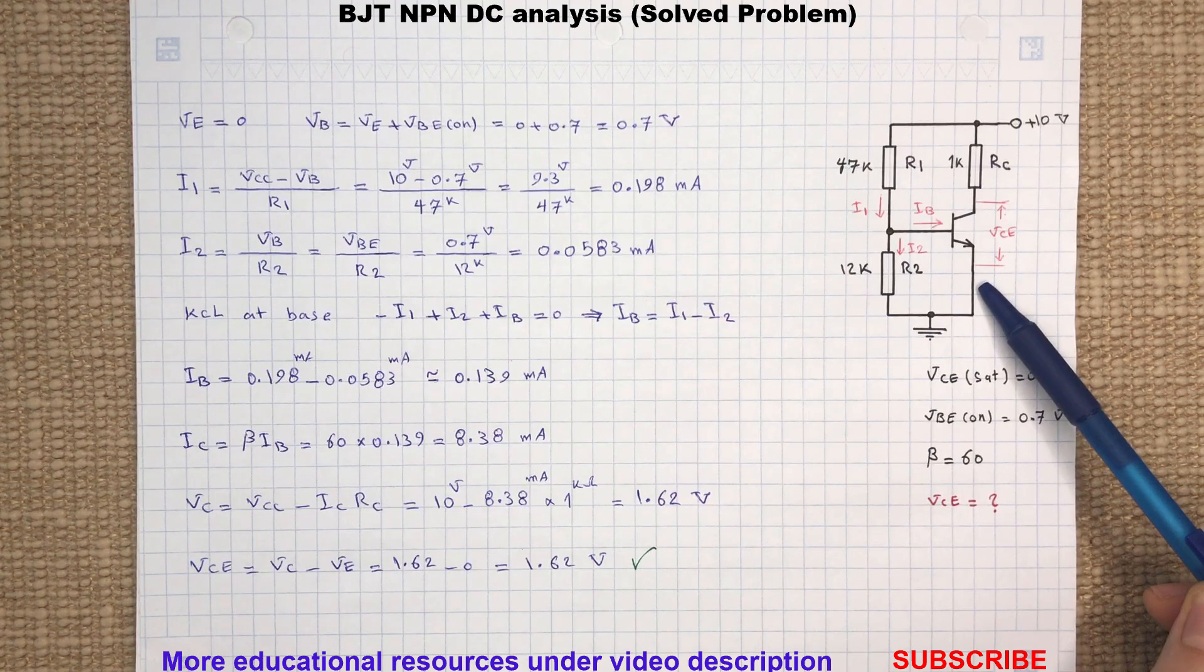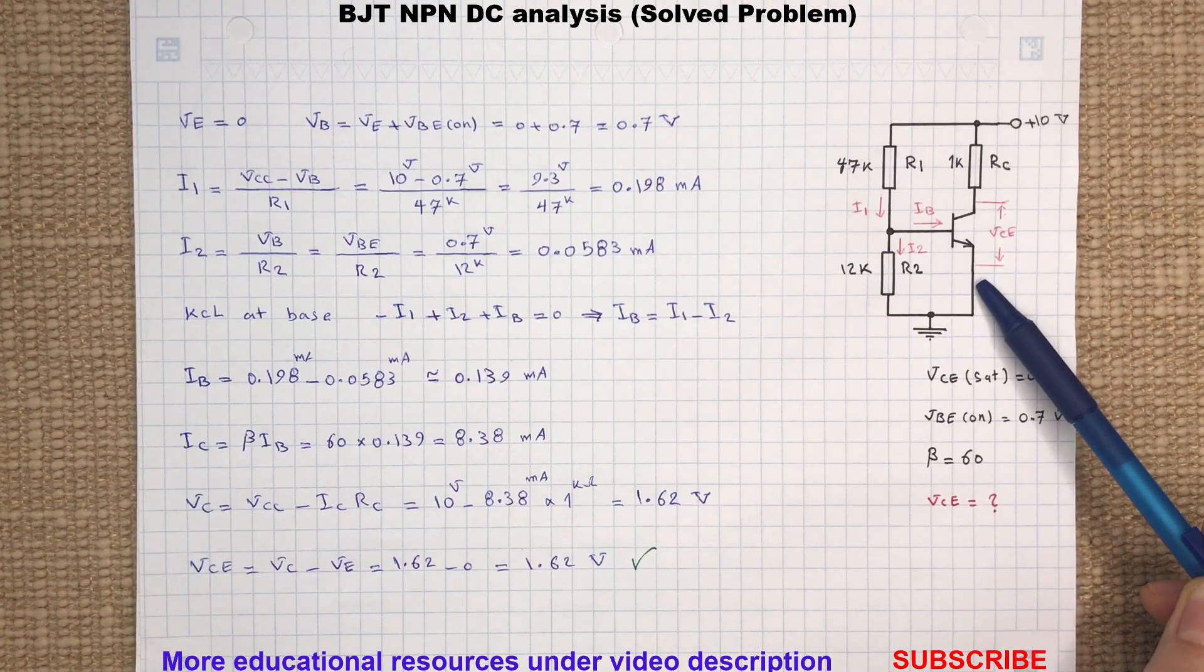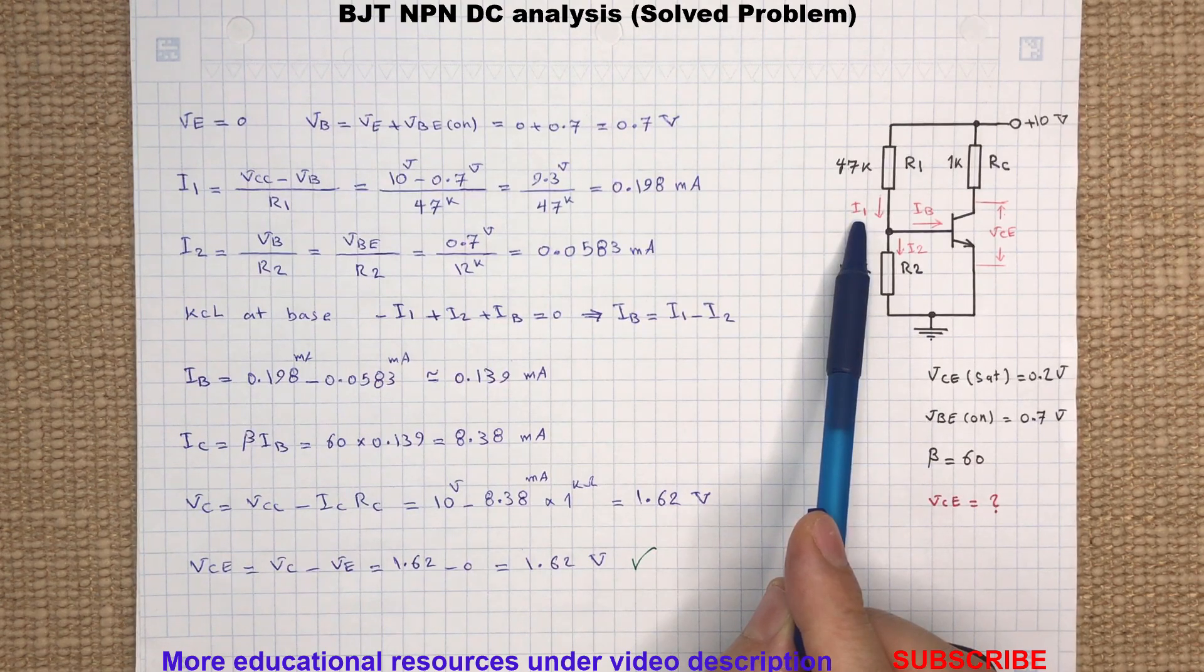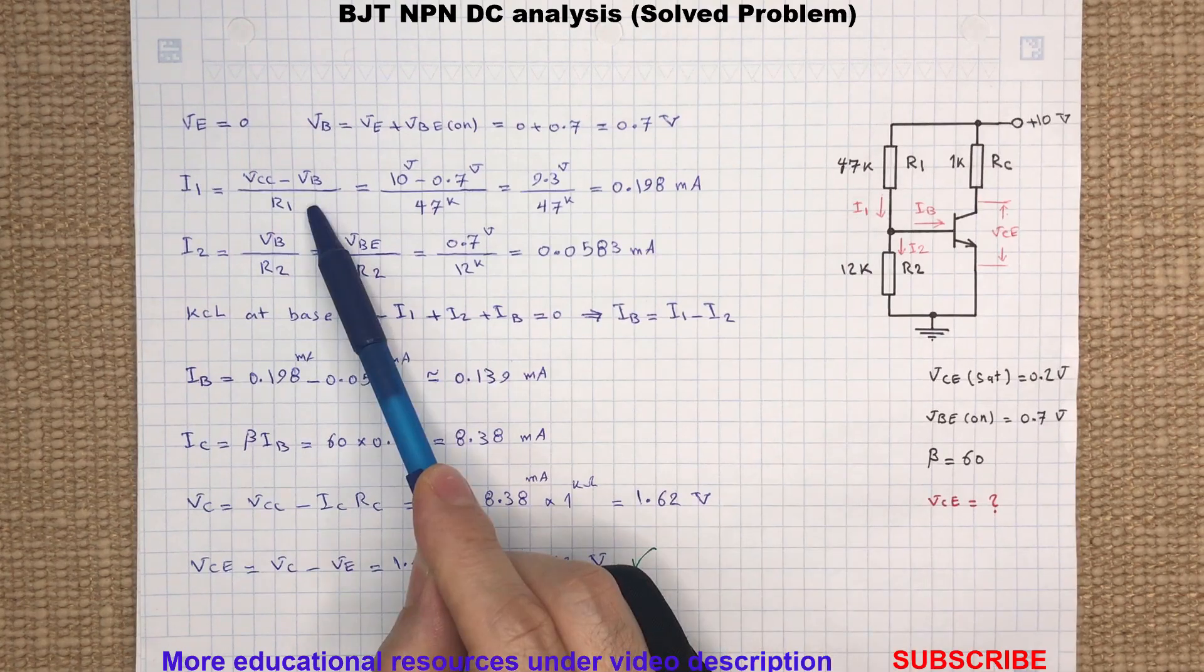Since the emitter is connected to the common ground, then the base will have 0.7 volts. Now since the base voltage is found, we can easily determine I1, the current flowing through resistor R1.